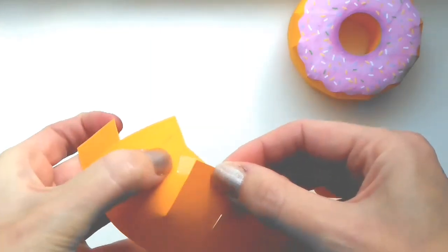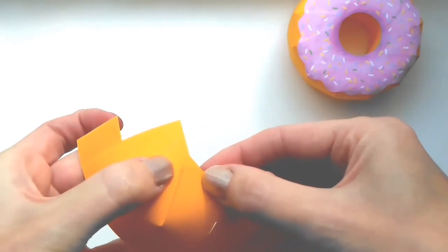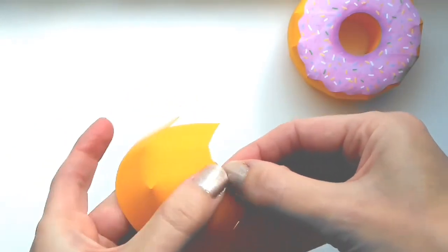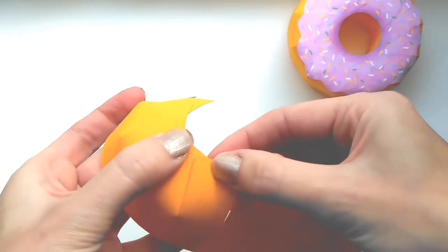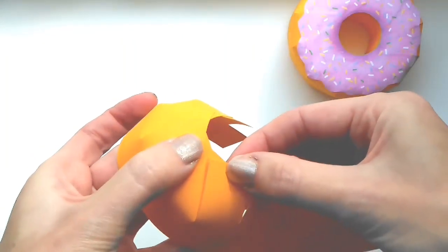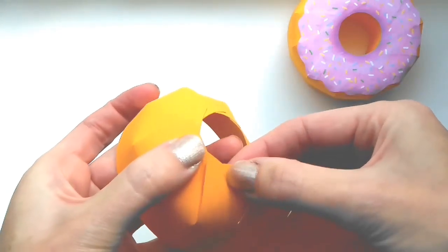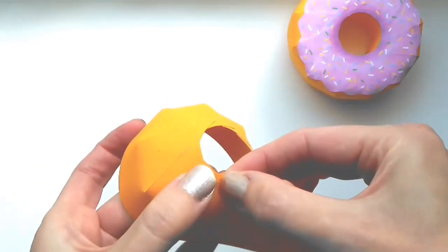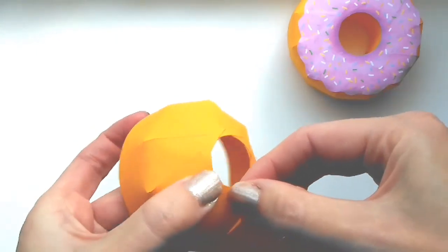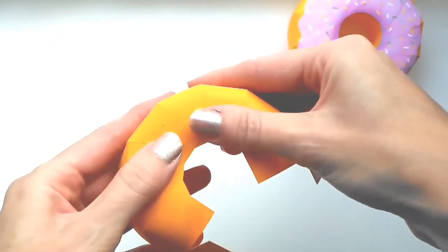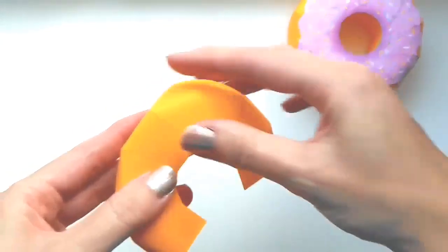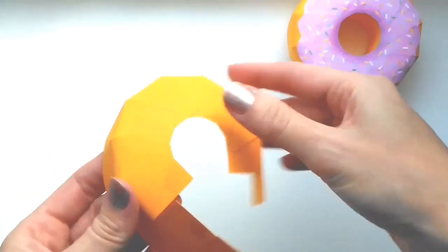When you get to about halfway around you will need to flatten it slightly just to ease it into shape. Try not to fold these edges though, try to keep them nice and curved.